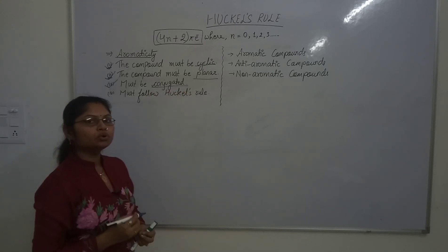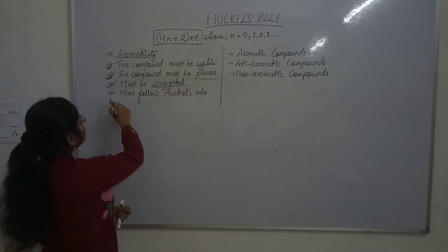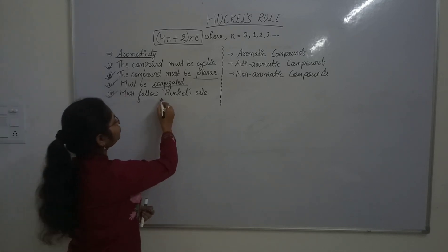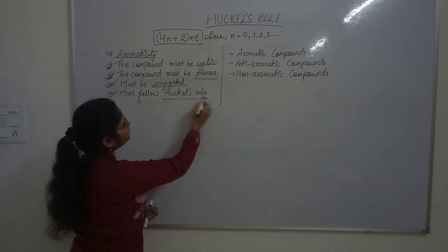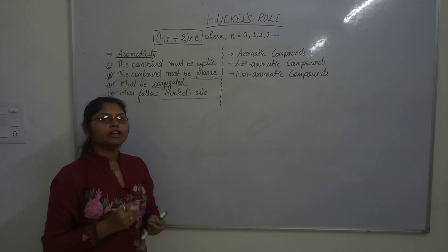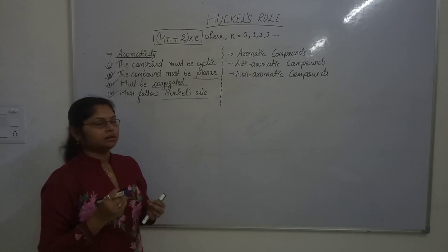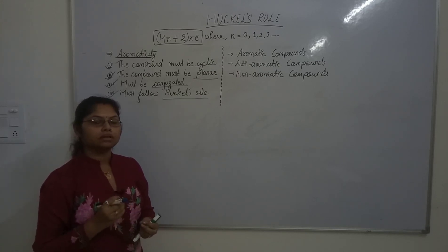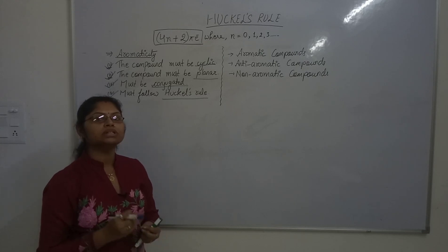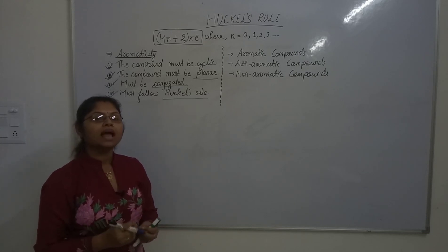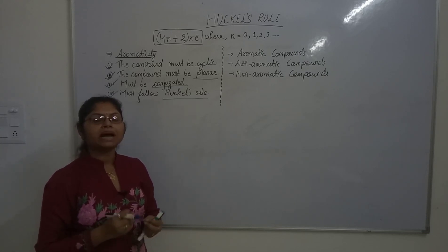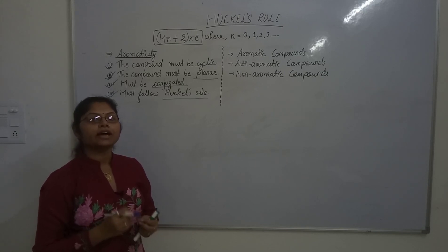The fourth and most important point is that the compound must follow Hückel's rule. According to Hückel, if a compound has (4n + 2) pi electrons in the system, then the compound is aromatic. If there is a presence of a 4n pi electron system, then the compound is anti-aromatic.